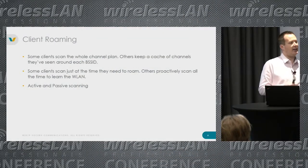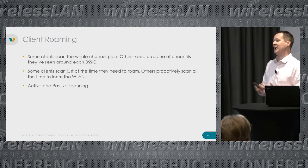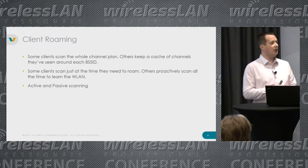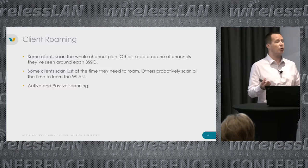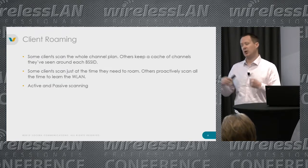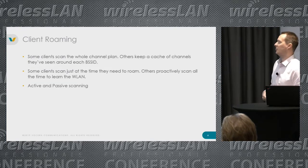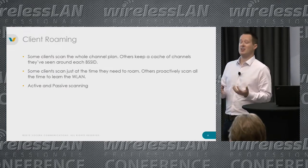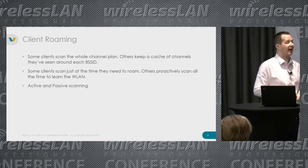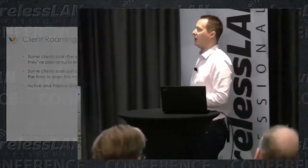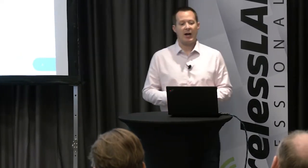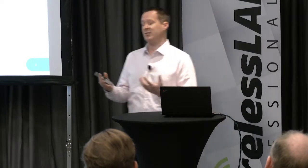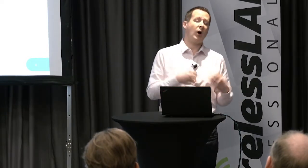There's also active and passive scanning. Active scanning is where the client goes on a channel and immediately probes, asking 'who can support this SSID?' Passive scanning applies to DFS channels where regulation stops the client from probing immediately — it must go on channel, listen first, hear some beacons from APs, and only then decide whether to probe.